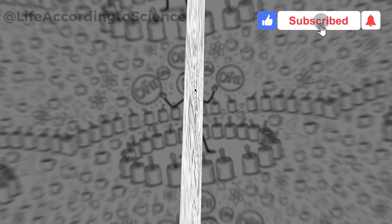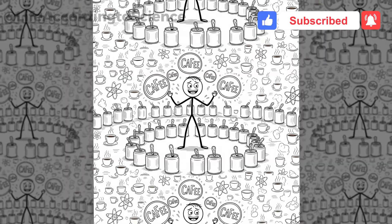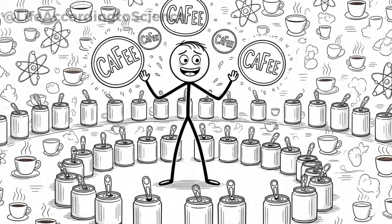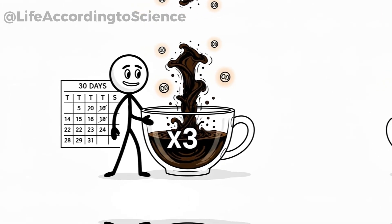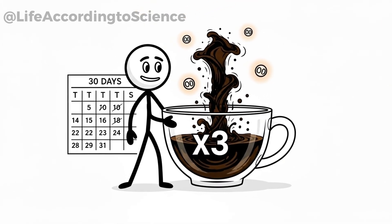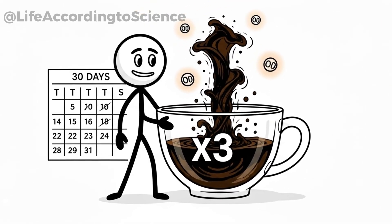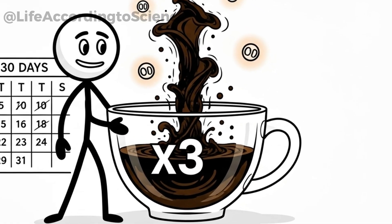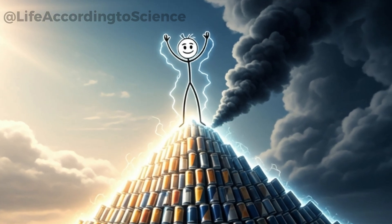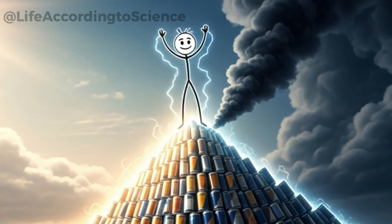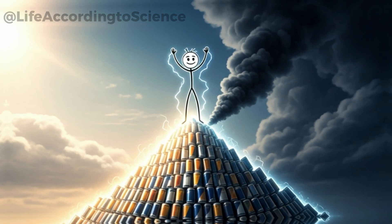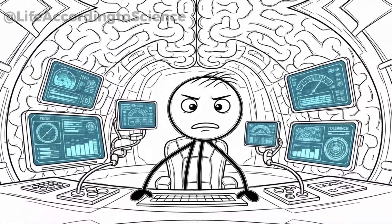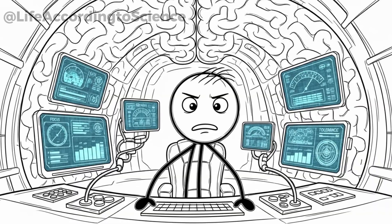But with daily energy drink consumption, you're not just sipping a little caffeine, you're potentially doubling or tripling your daily intake. Some cans contain the equivalent of two or even three cups of coffee. And when you multiply that by 30 days straight, the cumulative effect on your brain becomes striking. At first, you'll likely feel unstoppable, more productive, and sharper than ever. But as your brain adapts, tolerance builds up. That means you'll need more caffeine to feel the same boost.